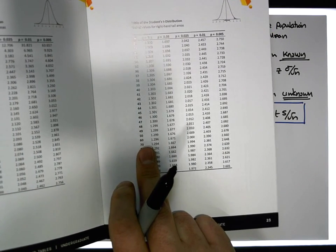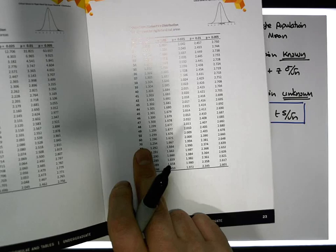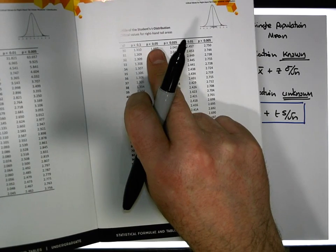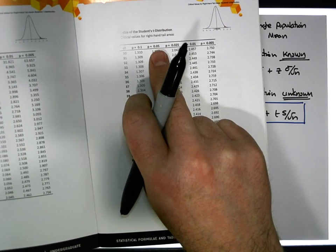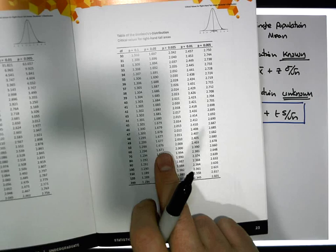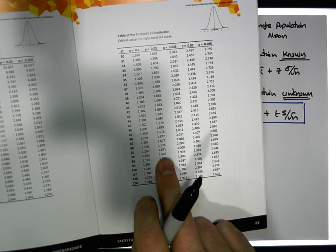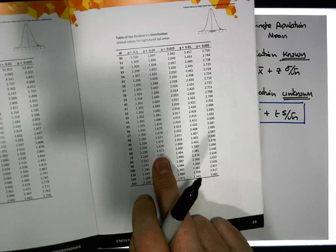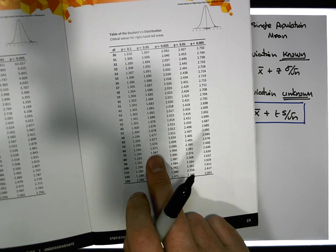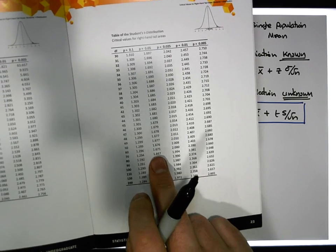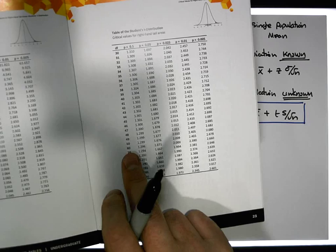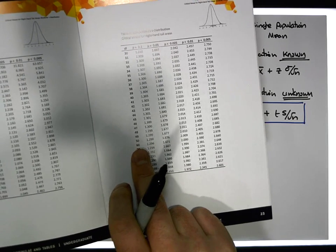The amount of area that we need in the right tail is 0.05, so the value I'm looking for is either 1.671 or 1.667. It's somewhere between those two values. What we'll do is take the value that's closest to the degrees of freedom.